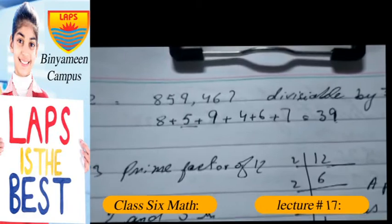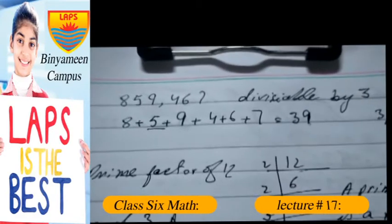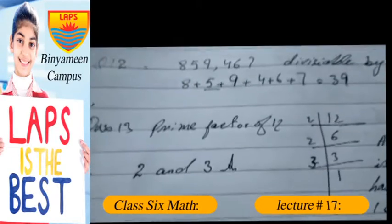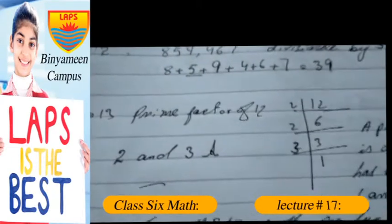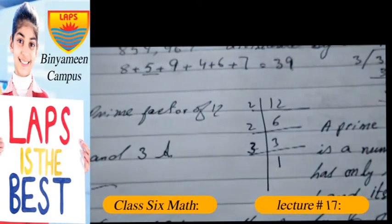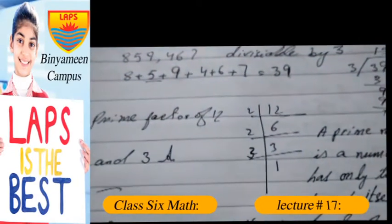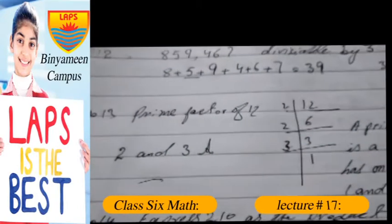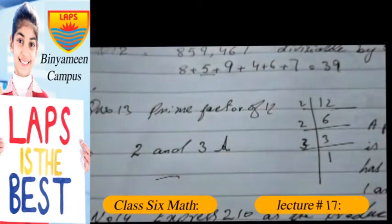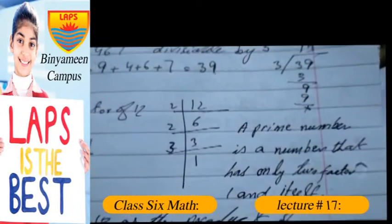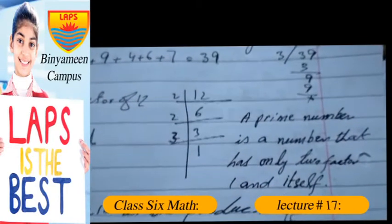Question number 13: prime factor of 12. Now we factorize, do prime factorization. 2 times 6 is 12, 2 times 3 is 6, 3 times 1 is 3. The prime factor of 12 is 2 and 3. Point should be noted: a prime number is a number that has only two factors, one and itself.